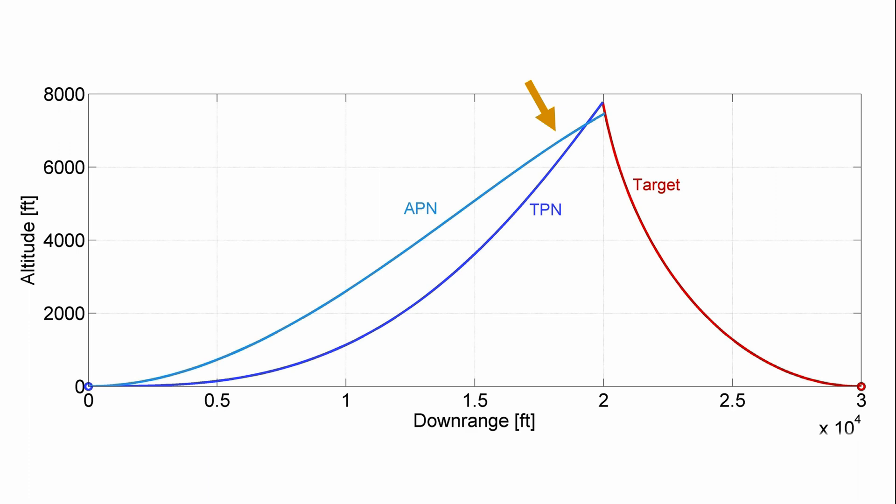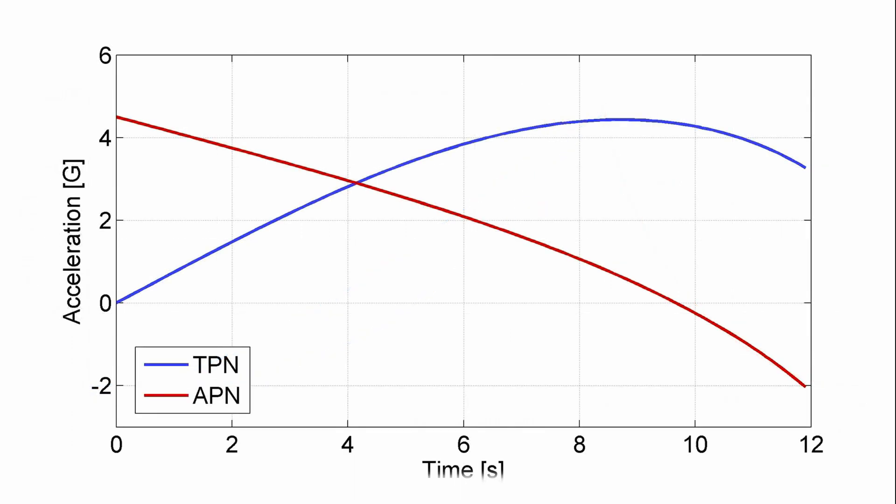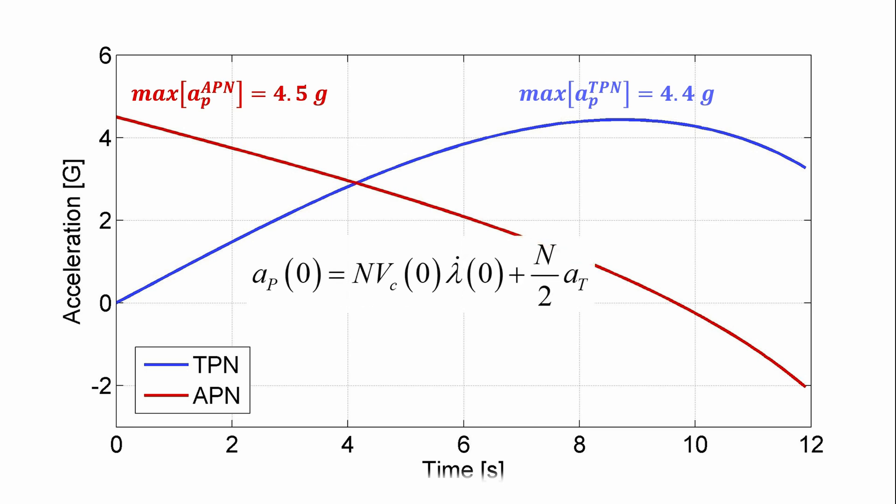Let's explore this more with the acceleration profiles for each engagement. Here are the profiles for true and augmented. First, true initially is zero because line of sight rate is zero. And then true stays positive in terms of acceleration, all the way up to a peak of 4.4 Gs. Augmented has a very different acceleration profile. It actually starts at its peak acceleration, 4.5 Gs. And that is solely due to the augmentation term in the law. Notice our zero ProNav value initially, and then n times at over 2, which gives 4.5 Gs.